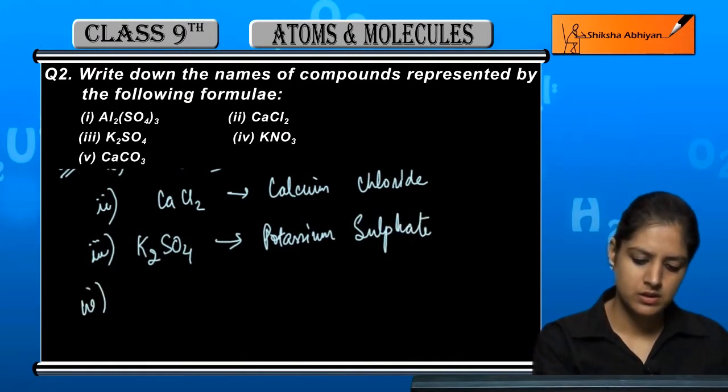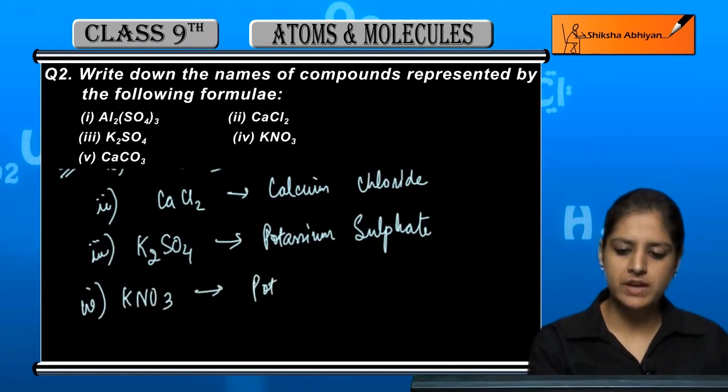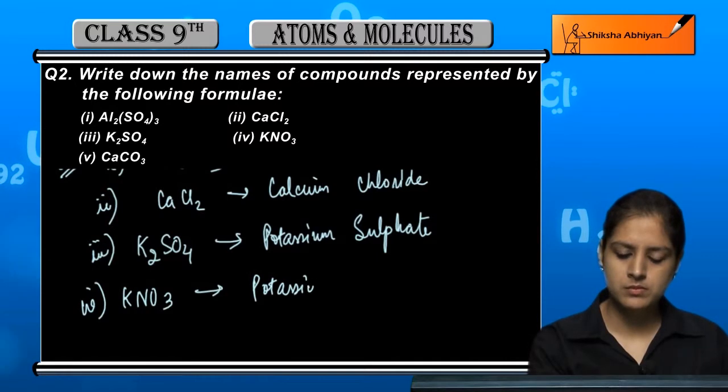Next is KNO3. K is potassium and NO3 is nitrate.